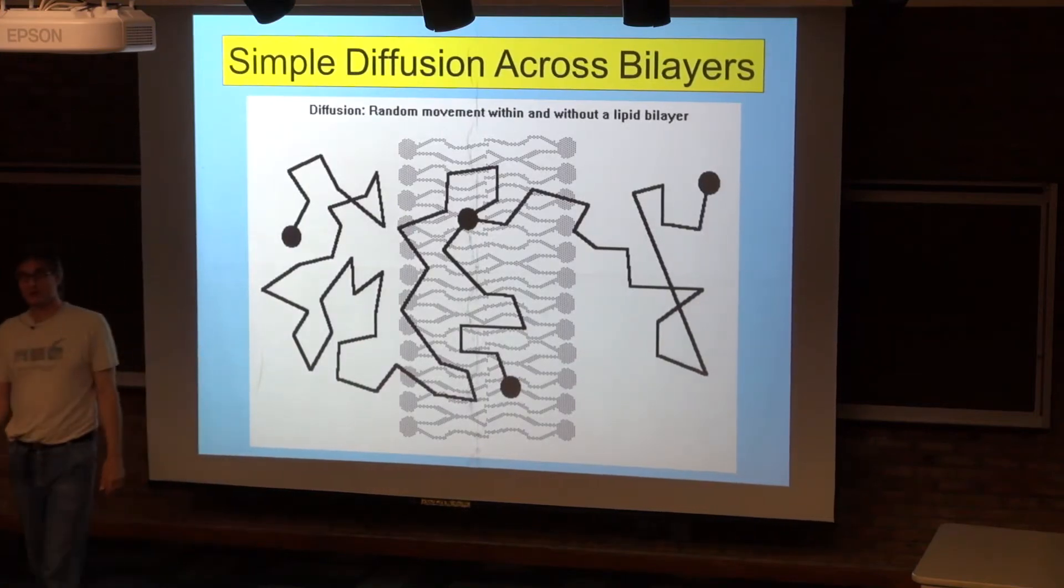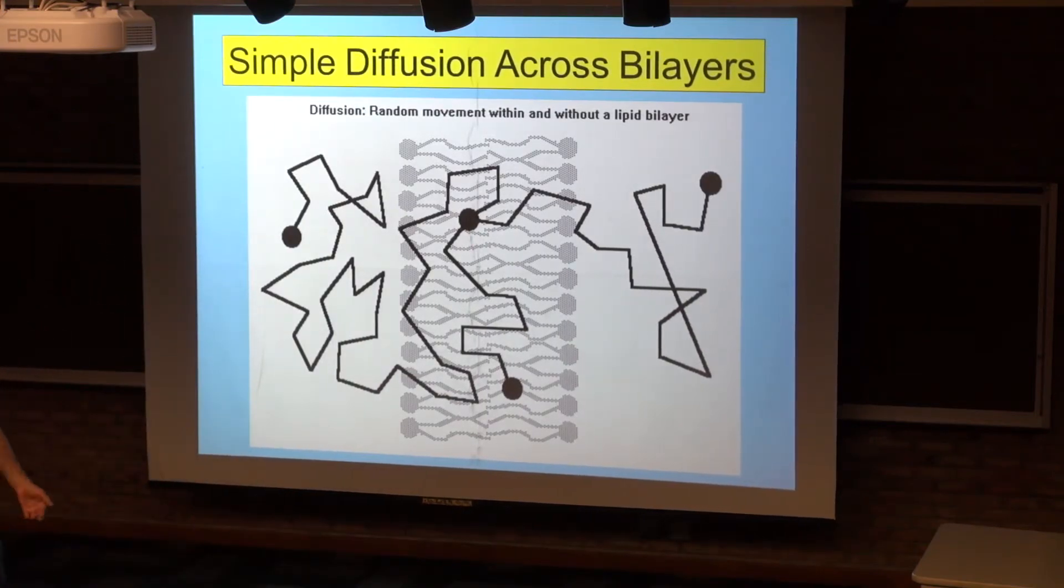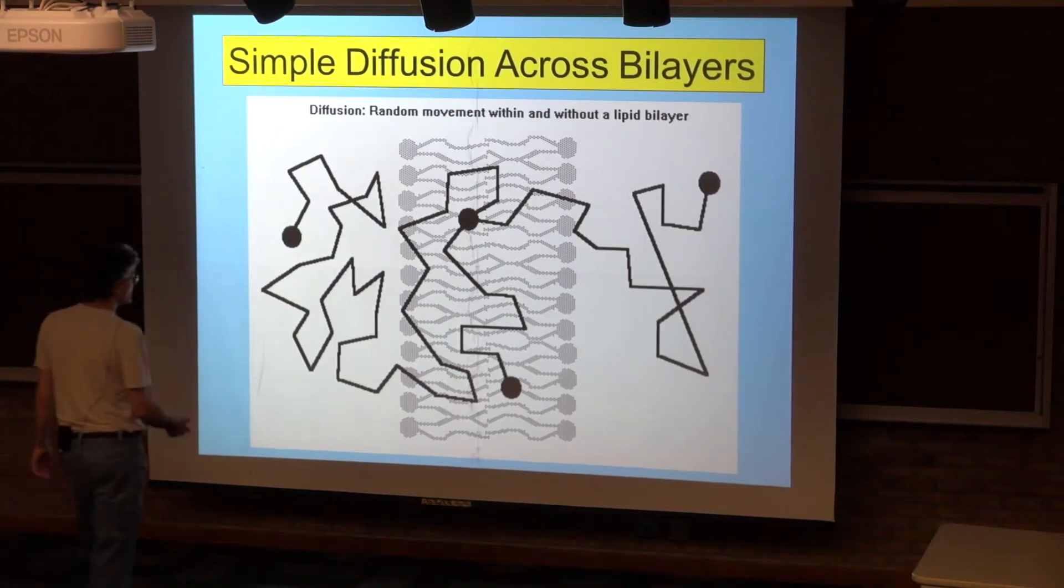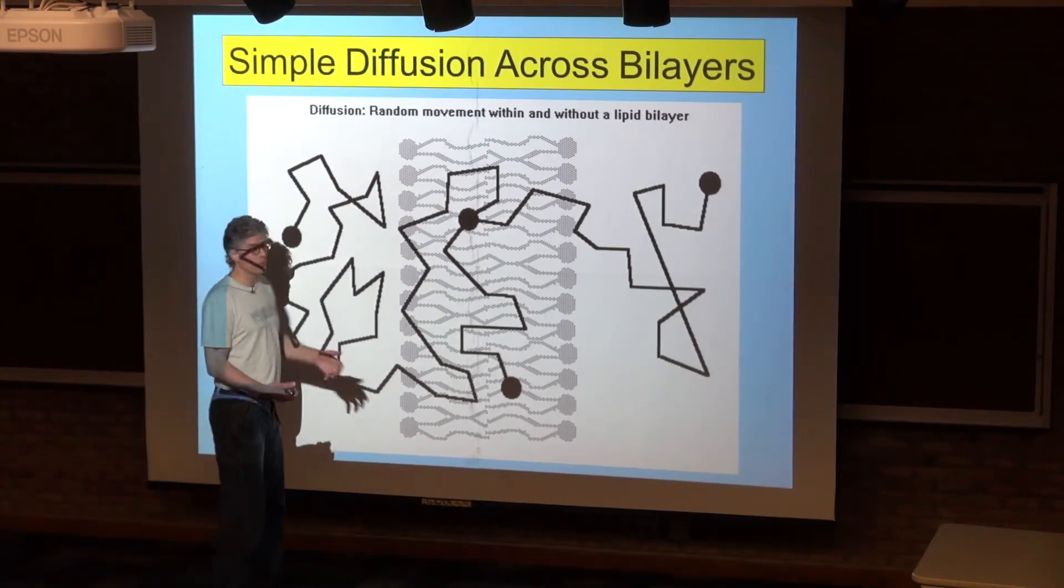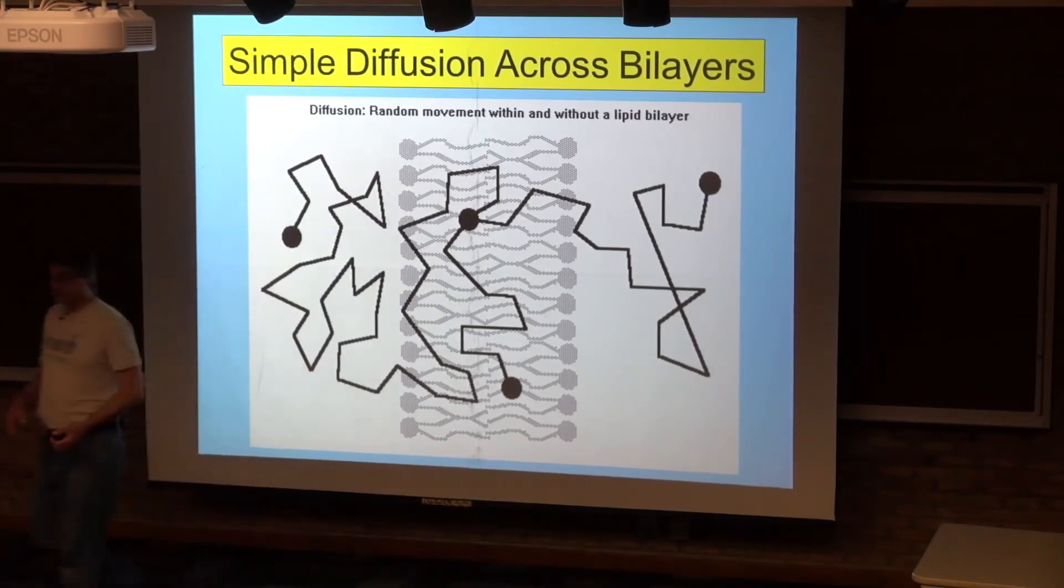So this is showing you a particle that's small and hydrophobic that's able to cross a lipid bilayer on its own, just giving you a sense of what it means to cross a lipid bilayer.